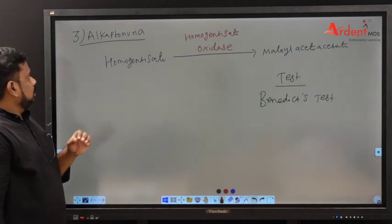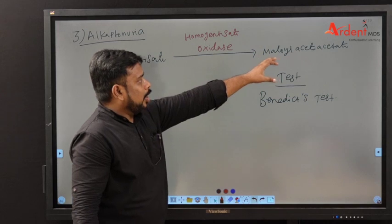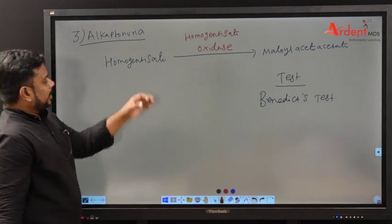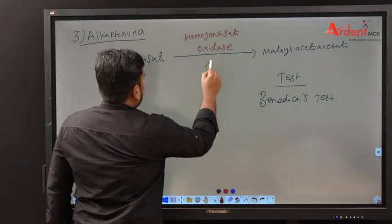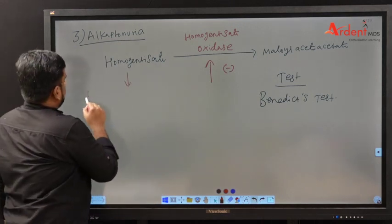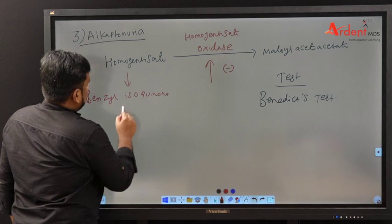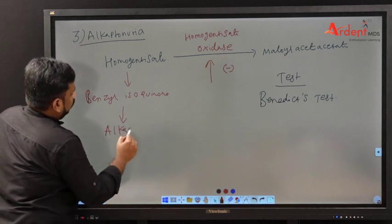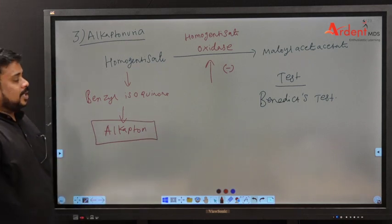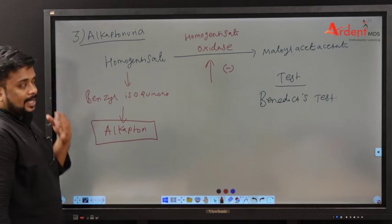Coming to alkaptonuria: homogentisate is converted into maleylacetoacetate by homogentisate oxidase. A defect in this enzyme leads to accumulation of homogentisate, which is converted into benzylisocrenone and polymerized into alkapton. This accumulates in intervertebral discs and soft tissues — this is called alkaptonuria.